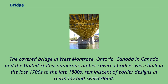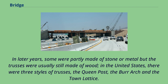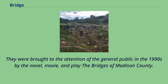The covered bridge in West Montrose, Ontario, Canada — in Canada and the United States, numerous timber-covered bridges were built in the late 1700s to the late 1800s, reminiscent of earlier designs in Germany and Switzerland. Some covered bridges were also built in Asia. In later years, some were partly made of stone or metal but the trusses were usually still made of wood. In the United States, there were three styles of trusses: the Queen Post, the Burr Arch, and the Town Lattice. Hundreds of these structures still stand in North America, brought to the attention of the general public in the 1990s by the novel, movie, and play The Bridges of Madison County.